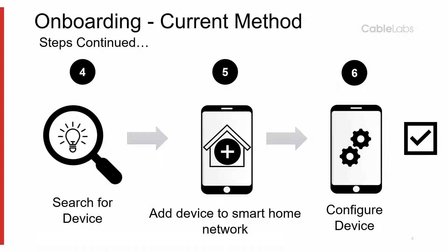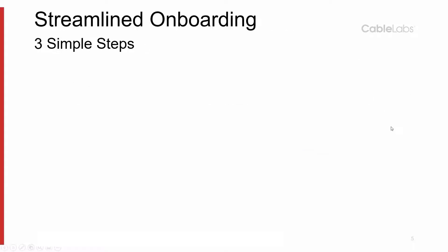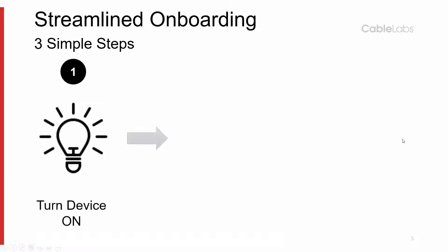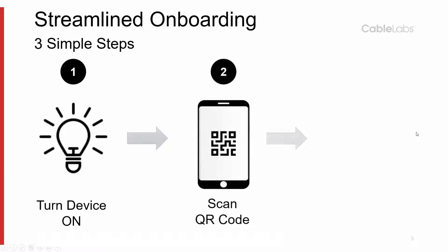The primary focus of streamlined onboarding is to simplify this process for the end user. Streamlined onboarding uses three simple steps to get a new device up and running in the home: the device is turned on; an app used to manage both the network and the standardized IoT management ecosystem is used to scan a QR code that is presented by the device, for example on its screen, its manual, or its box.